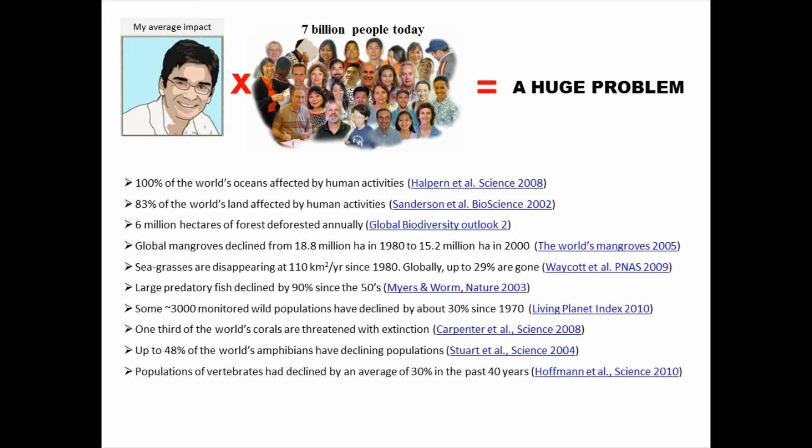Today, 100% of the world's oceans are affected by some type of human activity. 83% of the world's land as well. We are losing 6 million hectares of forest through deforestation every year. Mangroves, we lost 3 million hectares from 1980 to 2000. Seagrasses, large predators, wild populations, corals, amphibians, vertebrates. Those are just a few examples of the different ecosystems that are losing species as a result of our different environmental impacts.